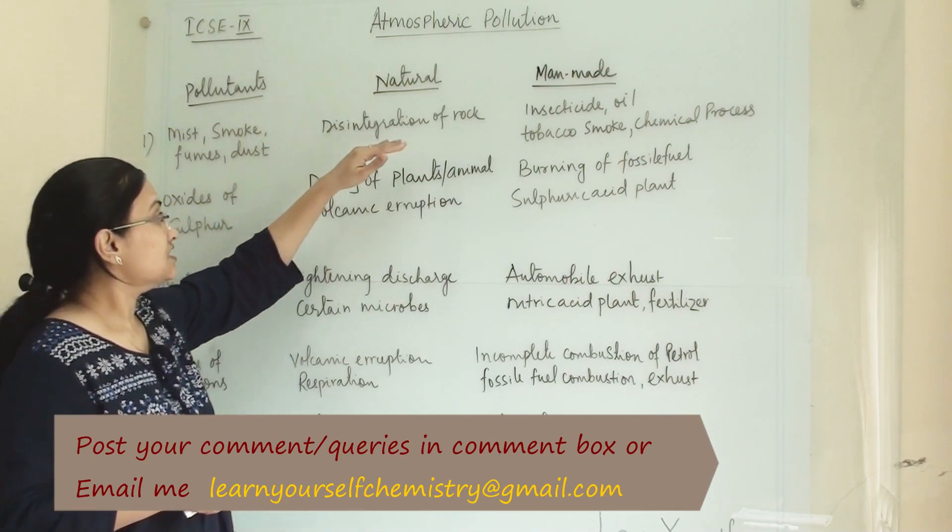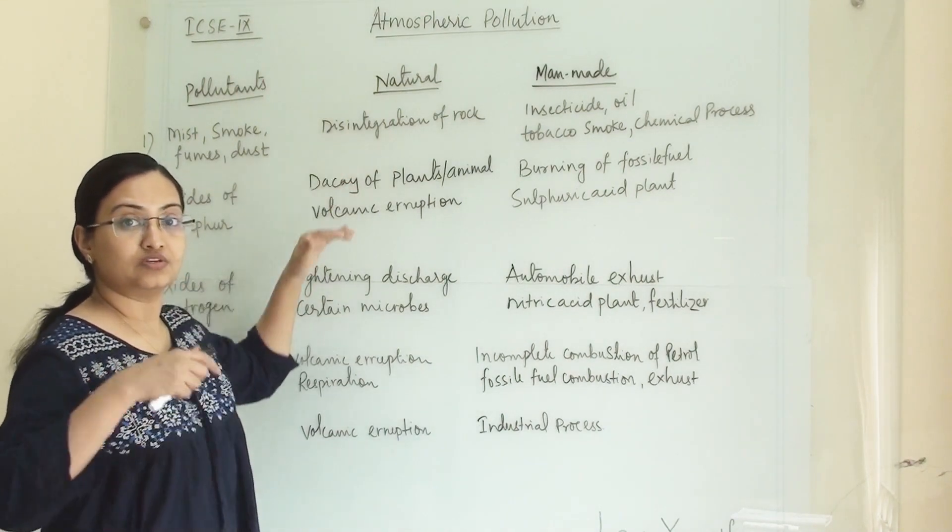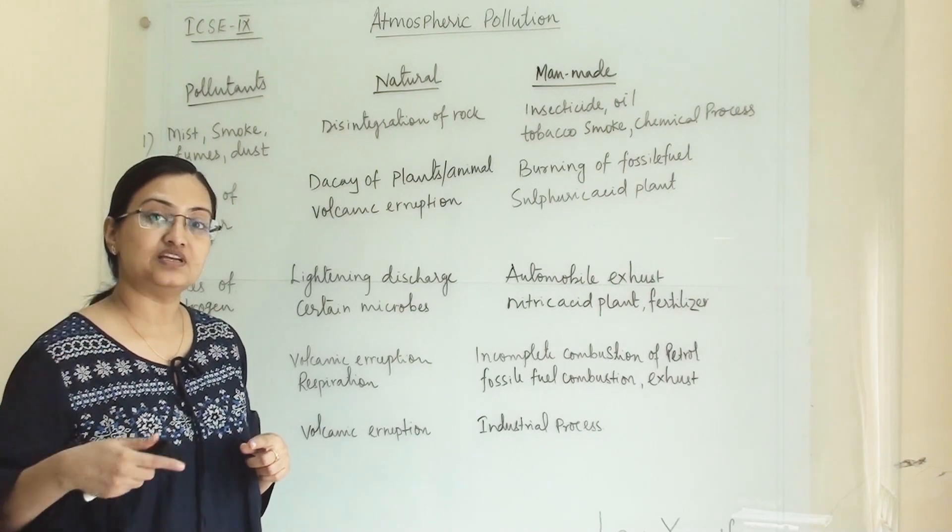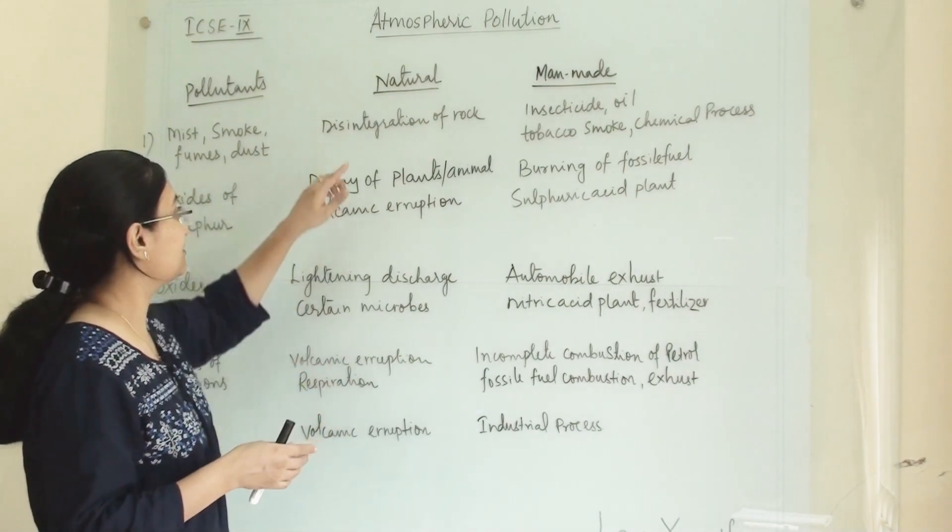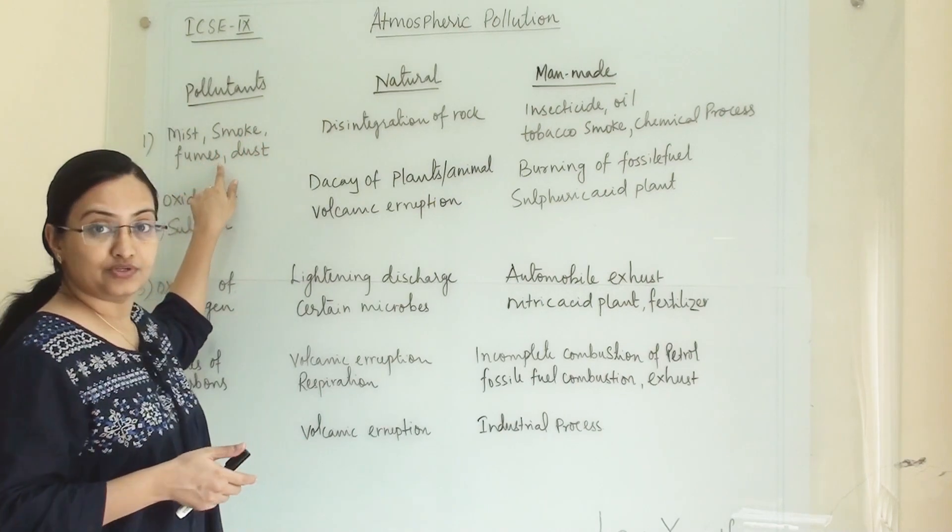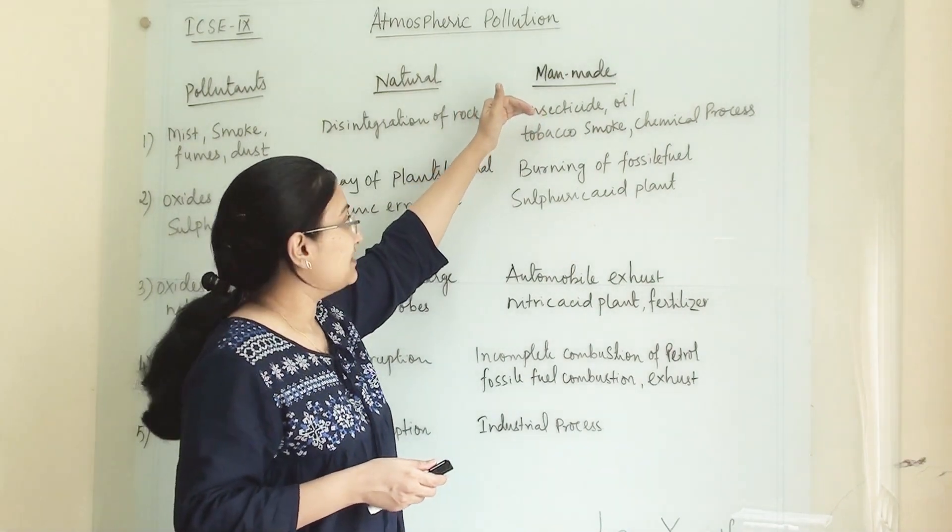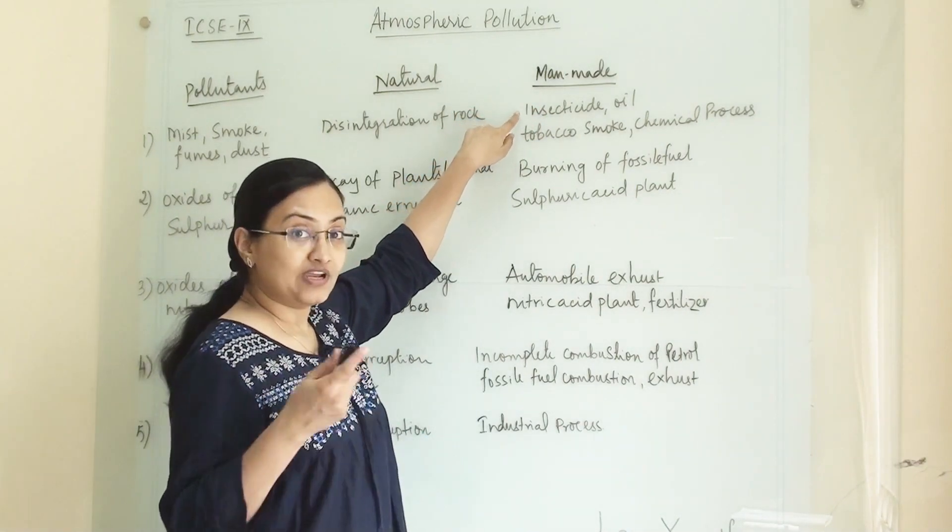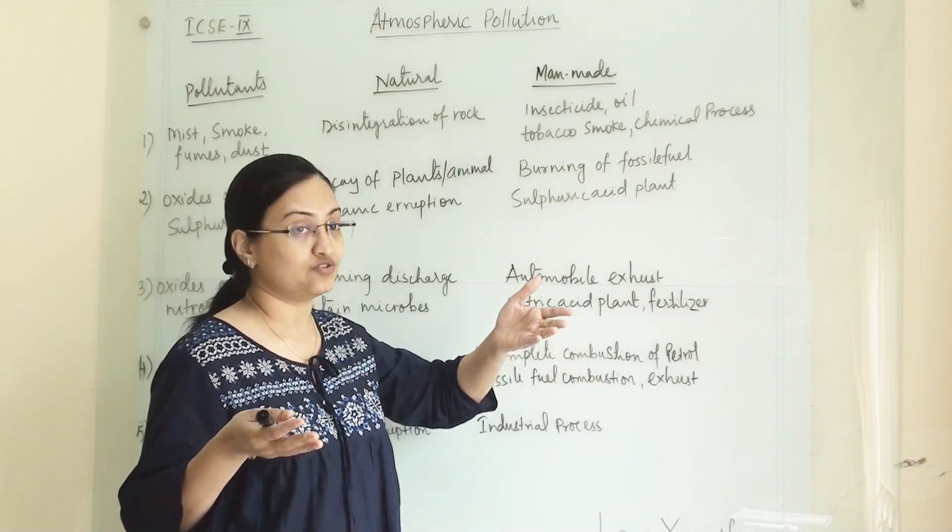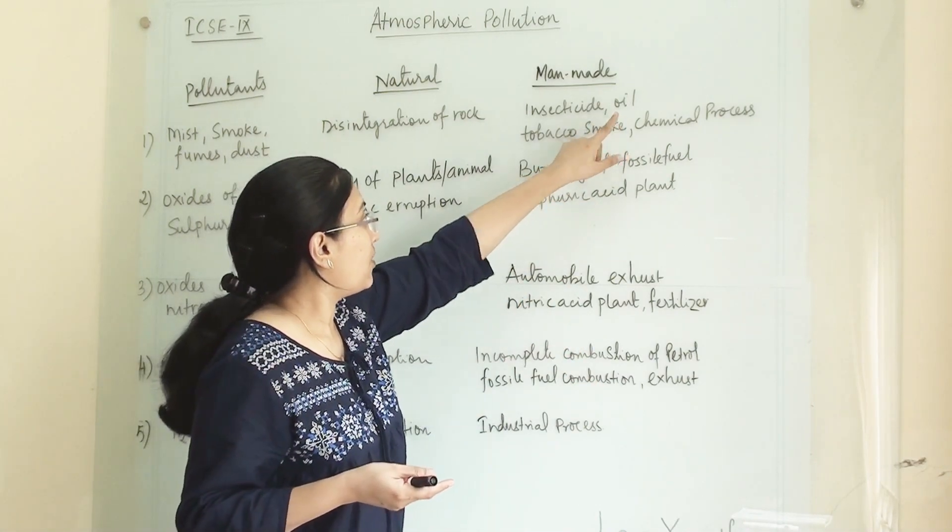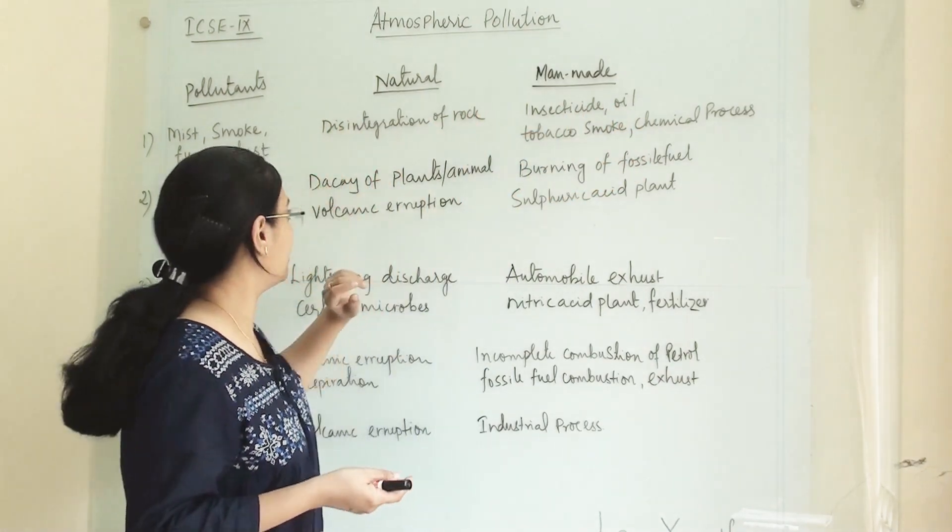This pollutant is generated through disintegration of rock. This process carries on through millions and billions of years, and due to this natural activity, these pollutants are generated in the atmosphere. Manmade activities like manufacturing and spraying insecticides on crops, oil and tobacco smoke, and chemical processes are responsible for these pollutants.